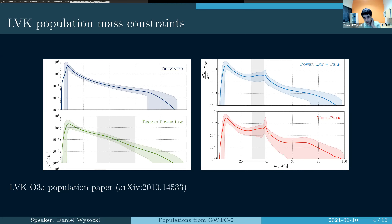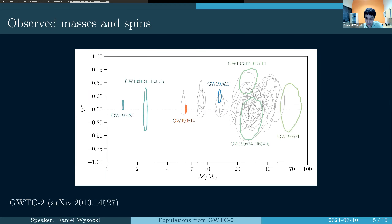These are all pretty simple mass models. Going into the spin estimates, things also get a little more interesting. This is a plot of chirp mass versus chi-effective from the GWTC-2 paper. Chi-effective describes multiple spin degrees of freedom constrained into just one number, so this isn't the full picture of spin, but it gives you some sense of what's going on.